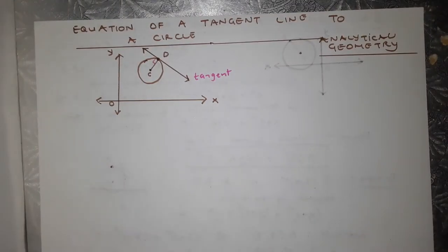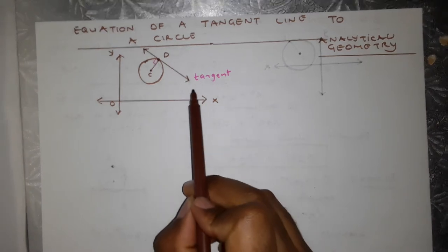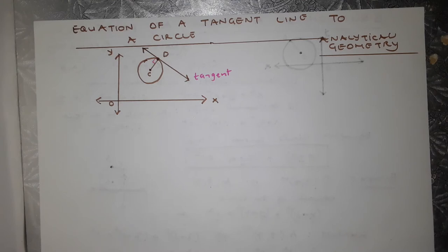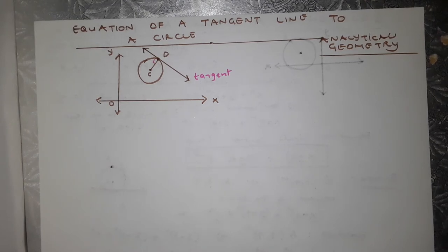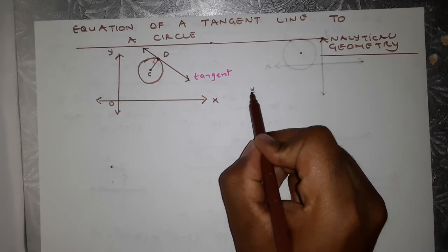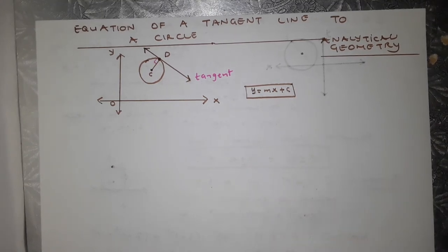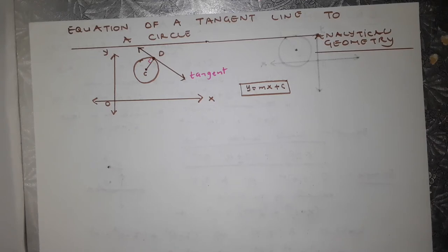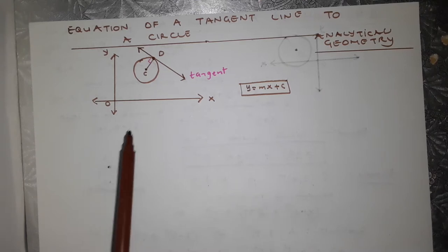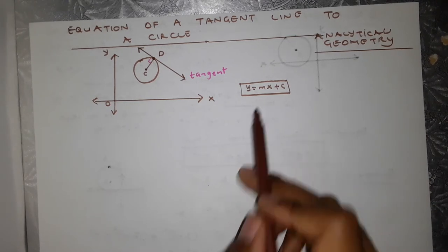Hello, grade 12s. Once more, in your Tesla exams, they might ask you to find the equation of a tangent line. A tangent line is the line that touches your circle at one point on its circumference. So basically, a tangent is a straight line that just touches the circle at one point in the circumference of the circle.